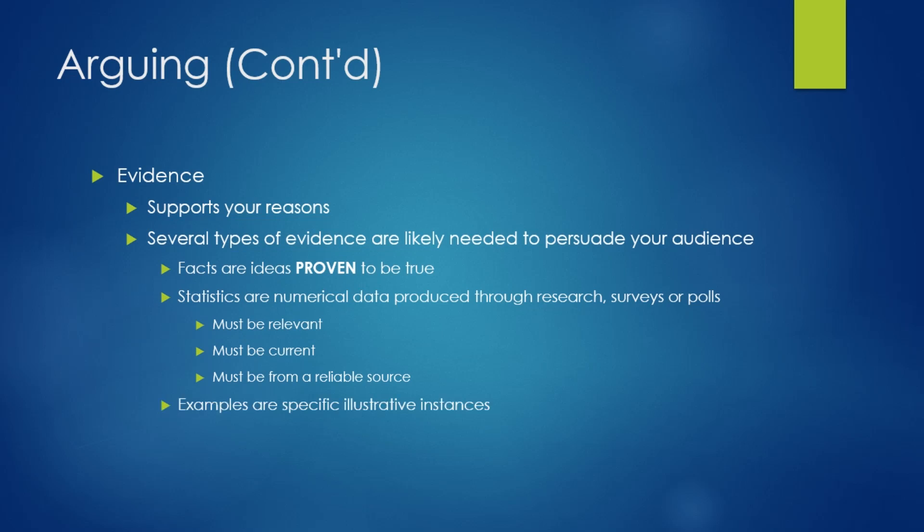If you go with something that is less than trustworthy in their sourcing, that makes your entire argument invalid. You can use examples, which are specific illustrative instances. It's when something actually happened. It's not a hypothetical. It's not like when you say, well, for instance, this could happen. There's no for instance here. It has to be a real world example, one which you can cite and somebody else can look it up and find it.